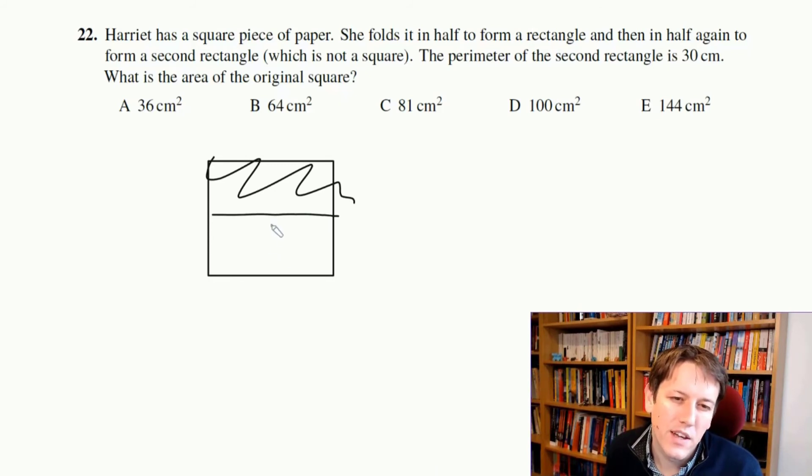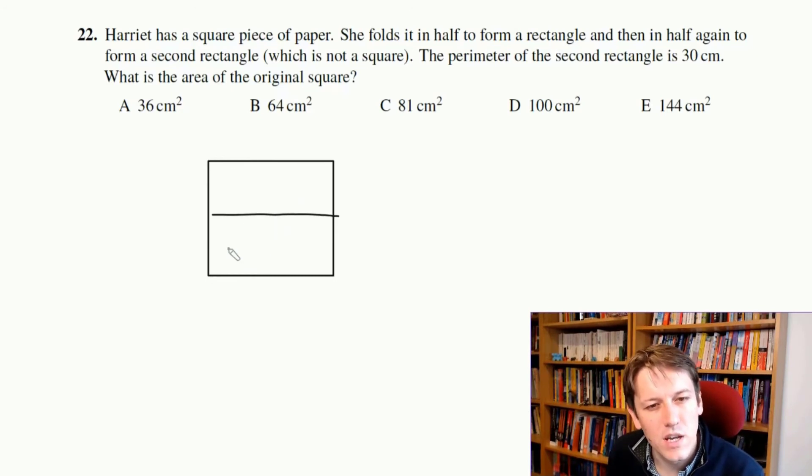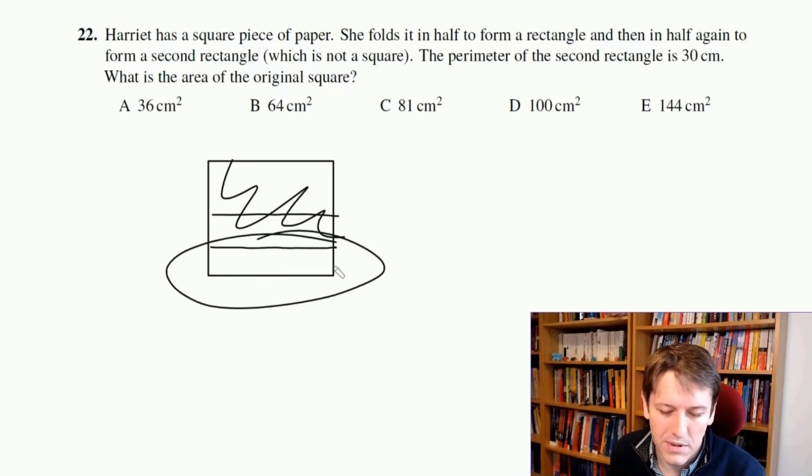And then, you know, it would just be the bottom half here. Now, if I fold it in half again along this line, I end up with a square, so that's not how we're meant to fold it. We're meant to fold it again in like this line here, so what I'm left with is just this bottom part here.